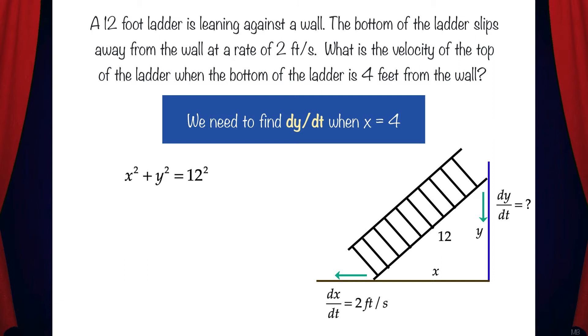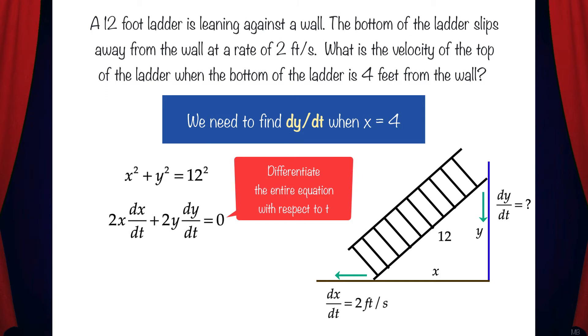Next, we'll take the derivative of the entire equation with respect to t. This gives us 2x times dx/dt plus 2y times dy/dt equals 0. Remember that 12 squared is a constant and its derivative is 0.